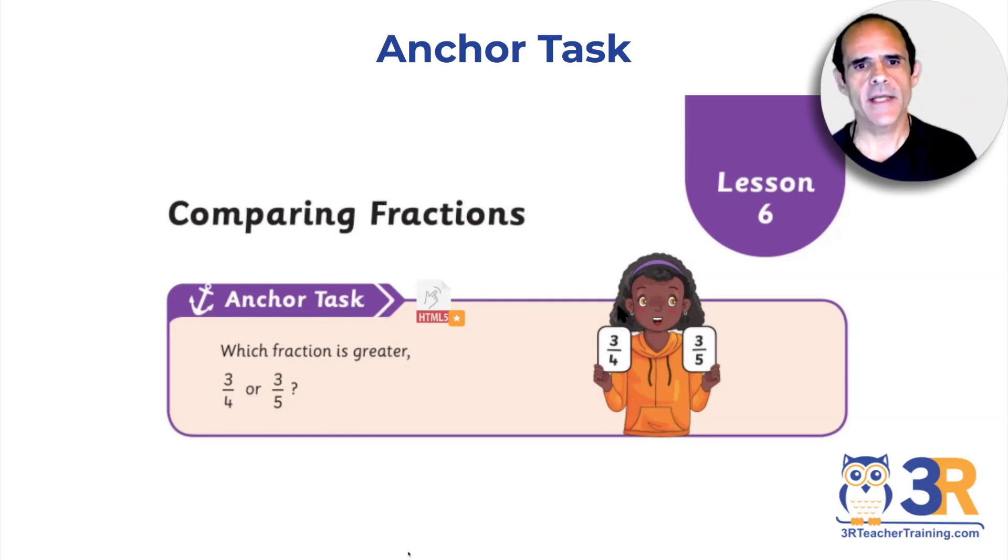So this is an anchor task from one of our textbooks. You can post an anchor task as a Flipgrid assignment and have the kids talk for two minutes about it. What I suggest is kids work on this anchor task, do as much as you can with yourselves, and if you need some help from your mom and dad go ahead and ask. Explain to me why you think three quarters is bigger than three fifths, and if you can show me two or three different ways that you could show that three fourths is bigger than three fifths.